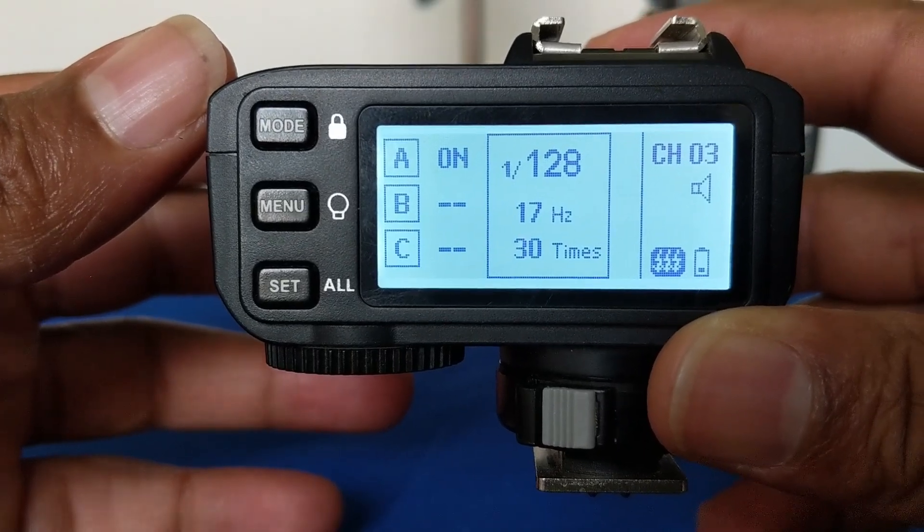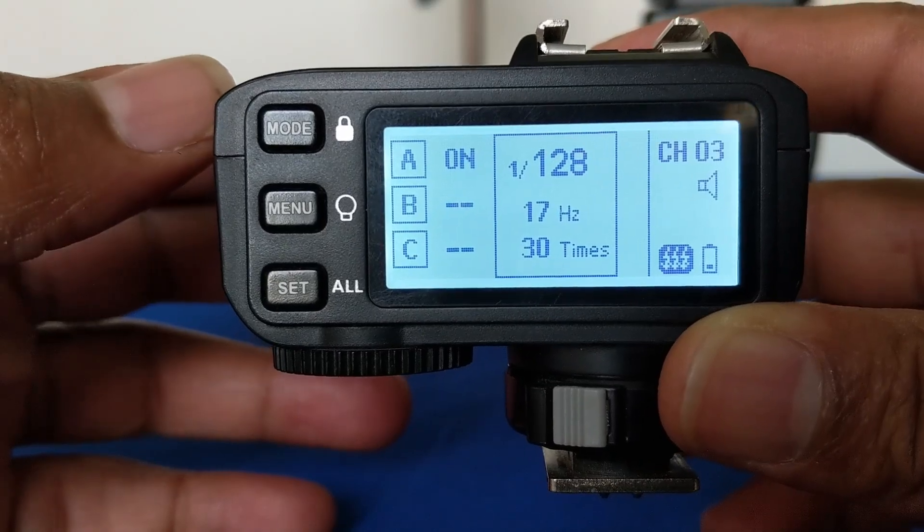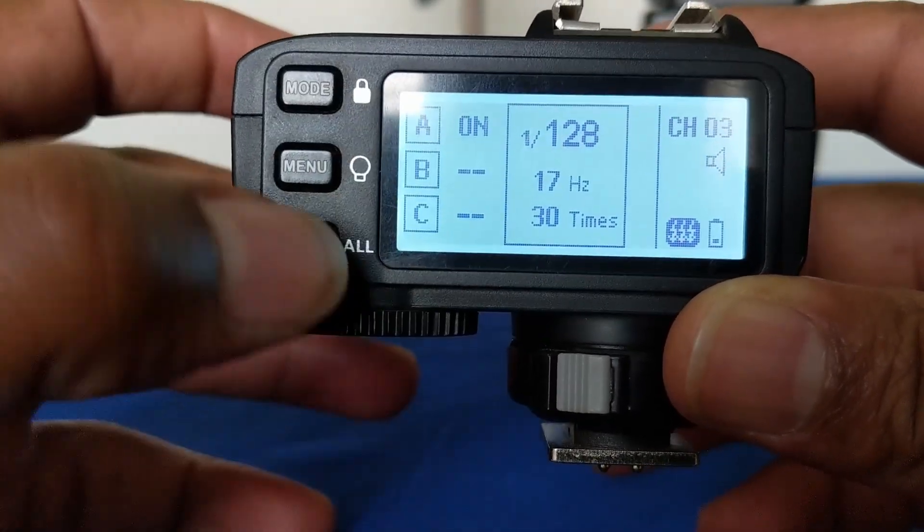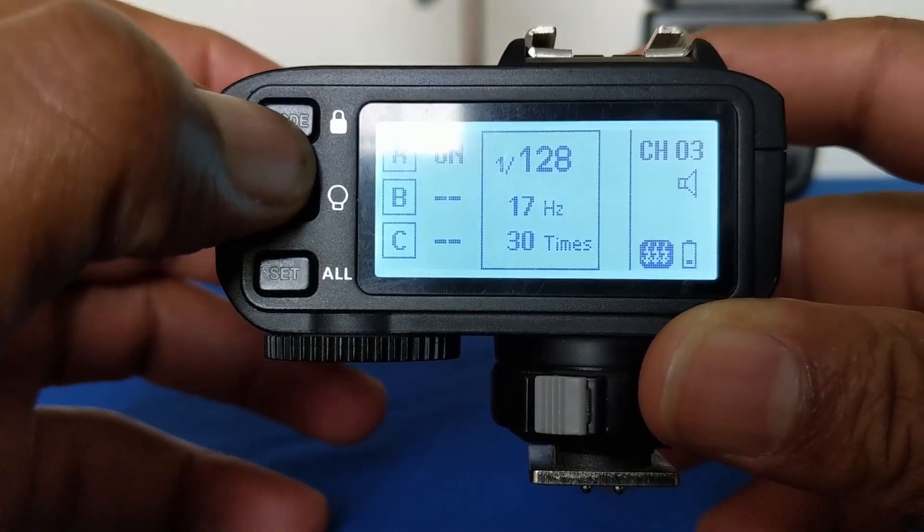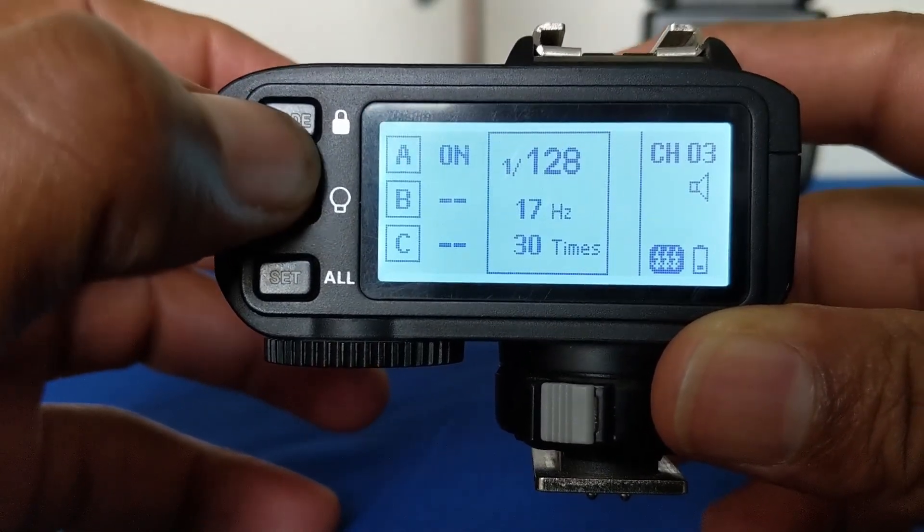The reason why the mode button is a little bit confusing is when nothing is highlighted. When you press the mode button, it will toggle between multi-flash and high-speed sync.